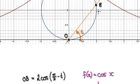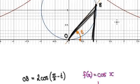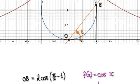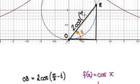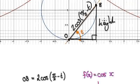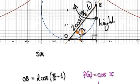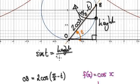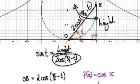Now that we know OB — now that we know this length here — we can work out the height. We've got our triangle here, and we now know that this length here is 2cos(π/2 minus t). So we're trying to find the height using sine. Sine of the angle — this time the angle is truly t — equals the height divided by the hypotenuse, which is 2cos(π/2 minus t). Rearranging, the height equals 2sin(t)cos(π/2 minus t).